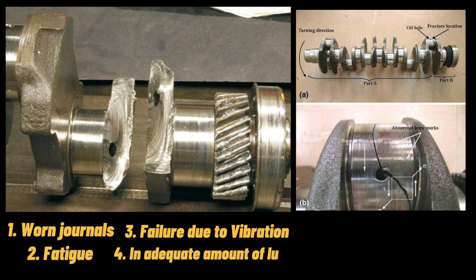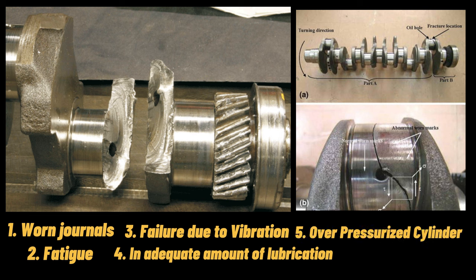Inadequate lubrication of the bearing in the crankshaft can lead to complete wiping out of the bearing and failure of the crankshaft. It is also possible that there is a hydraulic lock inside the liner caused by extreme pressure at the crankshaft, or that it is even bent.